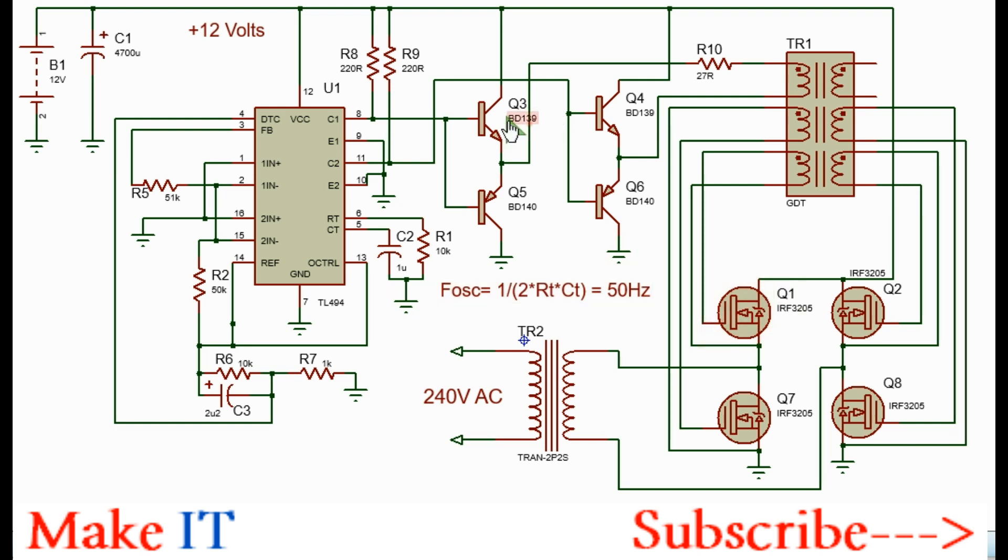So you need two BD-139 NPN transistors and their complementary BD-140 PNP transistors. For the power MOSFETs you will need IRF-3205 MOSFETs. You can easily handle 100 amperes.